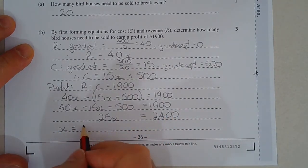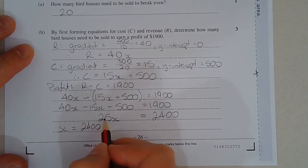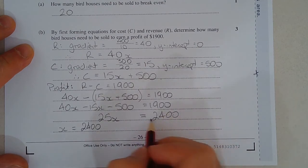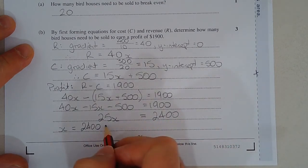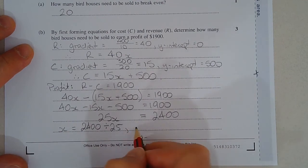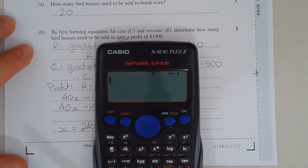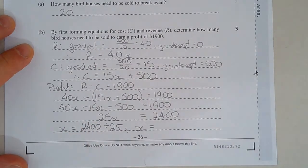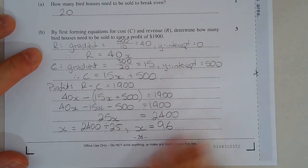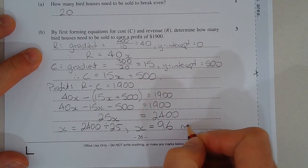x is equal to 2,400. We're going to divide that by 25. So this 25 is going to be used to divide the 2,400 by 25. 2,400 divided by 25 and we get 96. Therefore, need to sell 96.